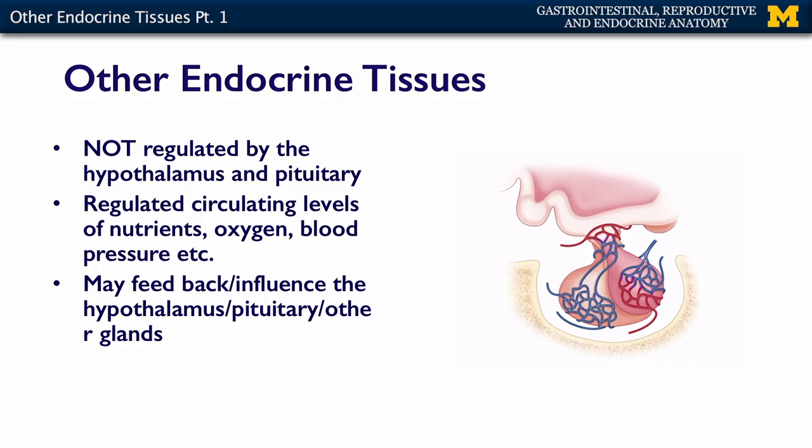Many of them may still feed back on the hypothalamus and pituitary and other endocrine glands, but their main stimulus that drives them to secrete is not going to be derived from the anterior or posterior pituitaries.